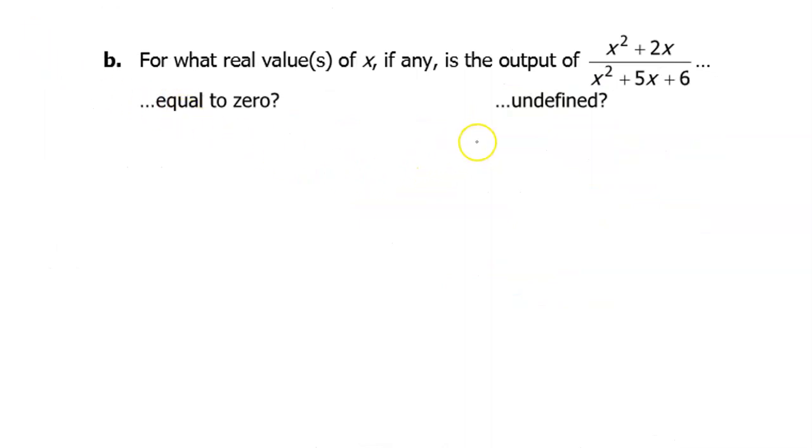Let's do one more. Again, first we need to rewrite this in factored form so we can see what's going on. If we factor the numerator, we're just pulling out a common factor of x. So that's going to leave (x+2) inside the parentheses.